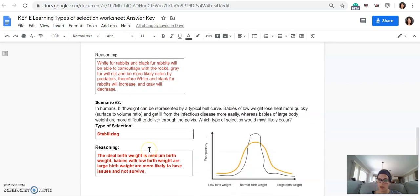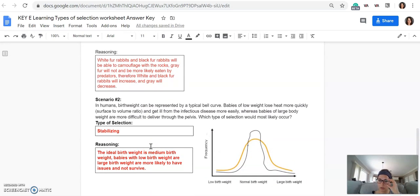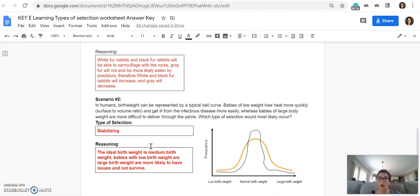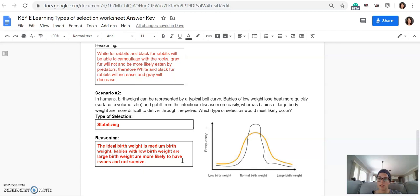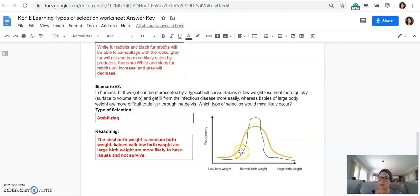And then the next scenario, which you were asked to do by yourself. So in humans, birth weight can be represented by a typical bell curve, so this gold line here. Babies of low weight lose heat more quickly because of surface area to volume ratio and get ill from the infectious disease more easily, whereas babies of larger weight are more difficult to deliver through the pelvis, which could cause the mother and the baby to both lose their lives. So which type of selection would most likely occur here?